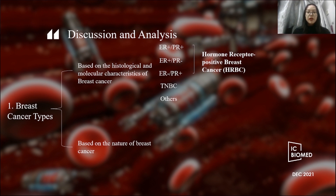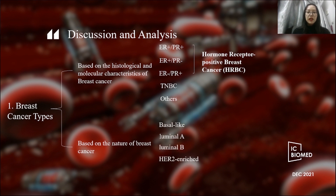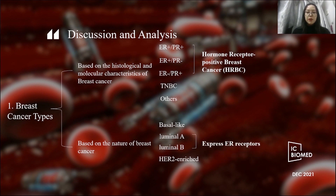Breast cancer can also be classified into four subtypes according to its nature: Luminal A, Luminal B, and HER2-enriched breast cancer, among which Luminal A and Luminal B breast cancer can express ER, while HER2-enriched breast cancer could not express ER.